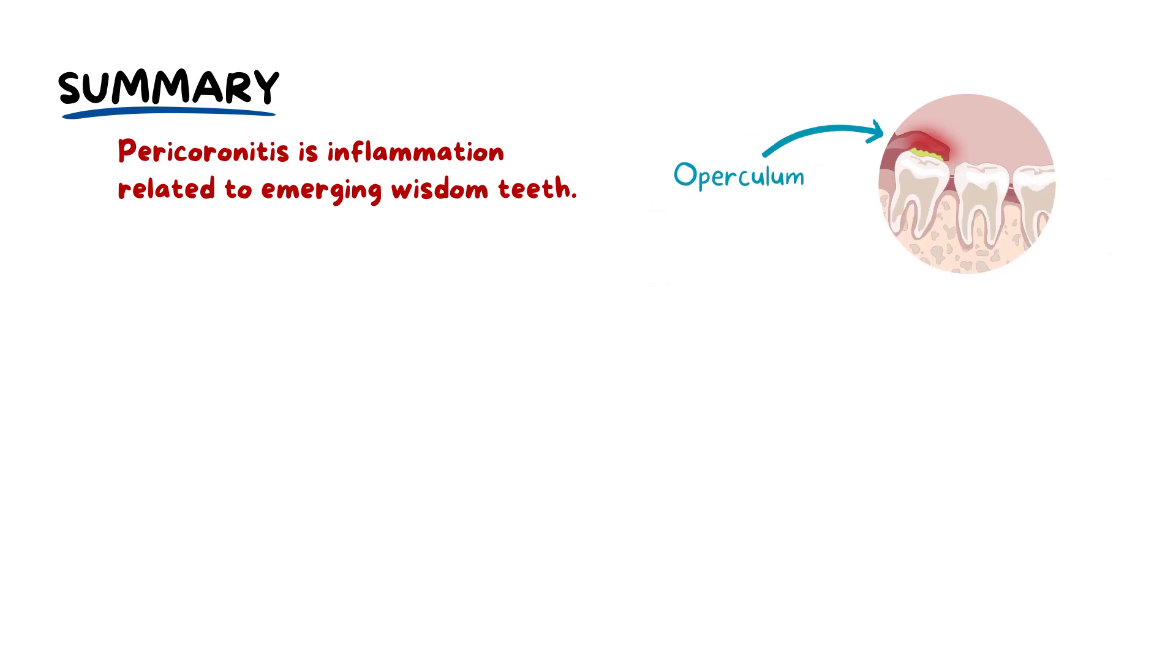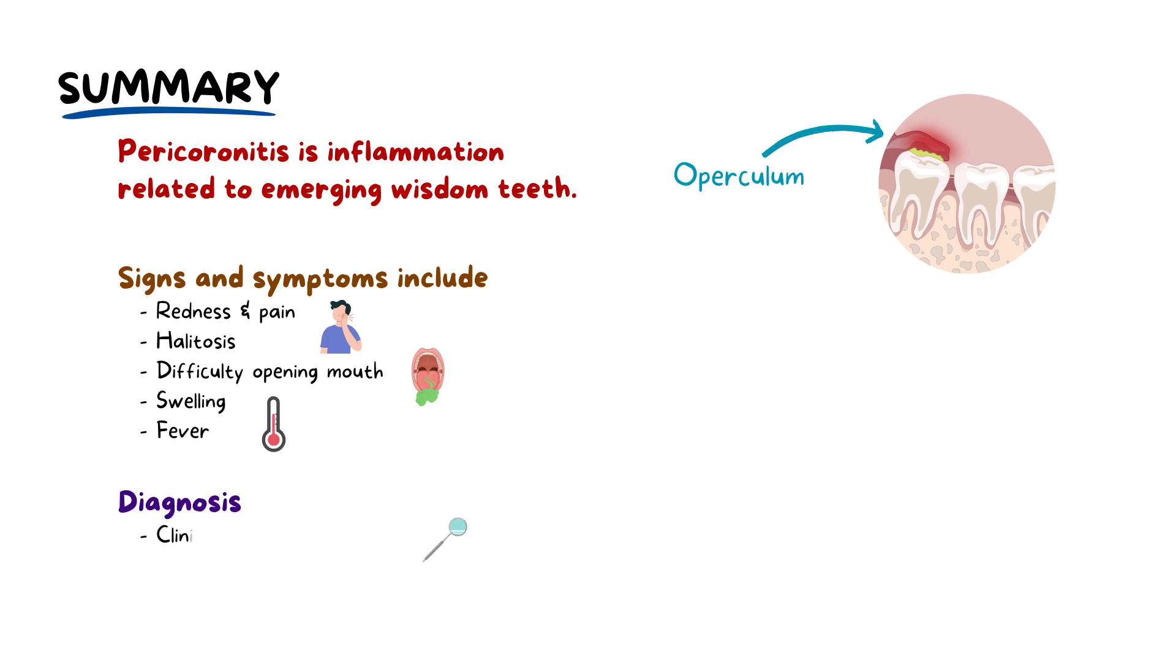To summarize, pericoronitis is an inflammation often accompanying the emergence of a wisdom tooth. The main instigator is the operculum, a gum flap that traps debris and bacteria. Signs and symptoms include redness, pain, halitosis, and sometimes difficulty opening the mouth with swelling and fever. The diagnosis leans on clinical examination and radiography. Addressing the condition usually involves good hygiene practices, pain management, and surgical interventions.